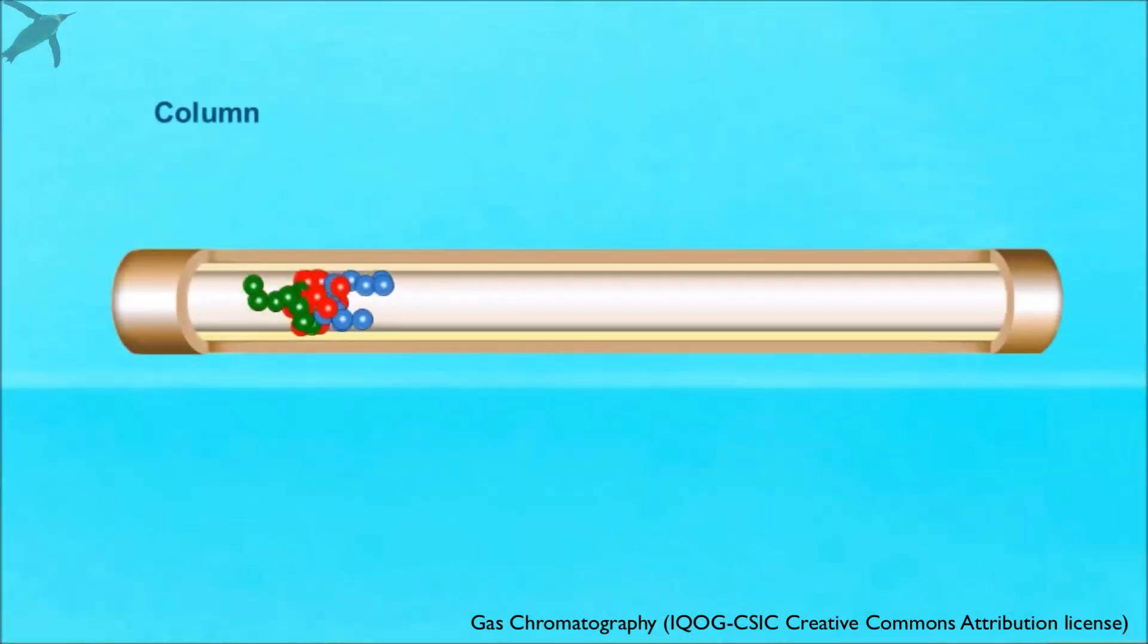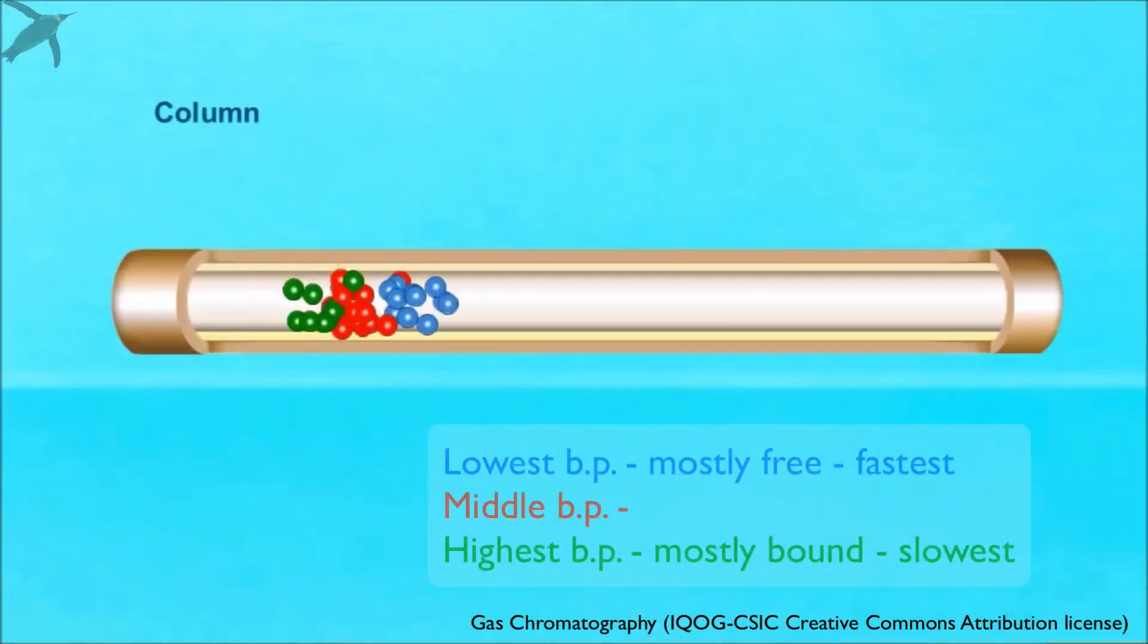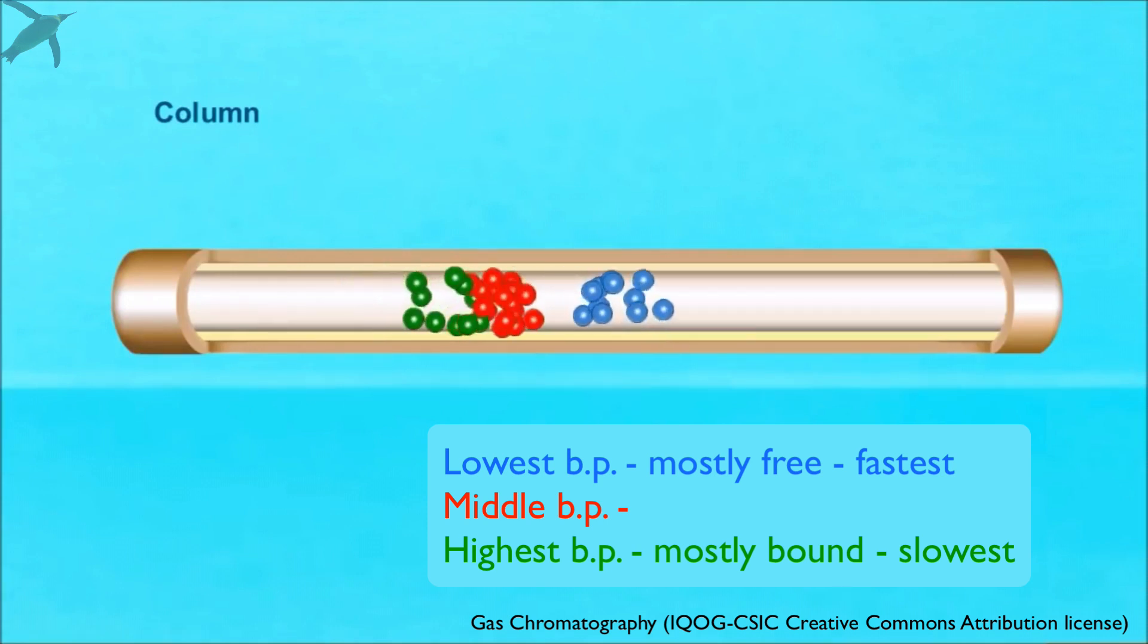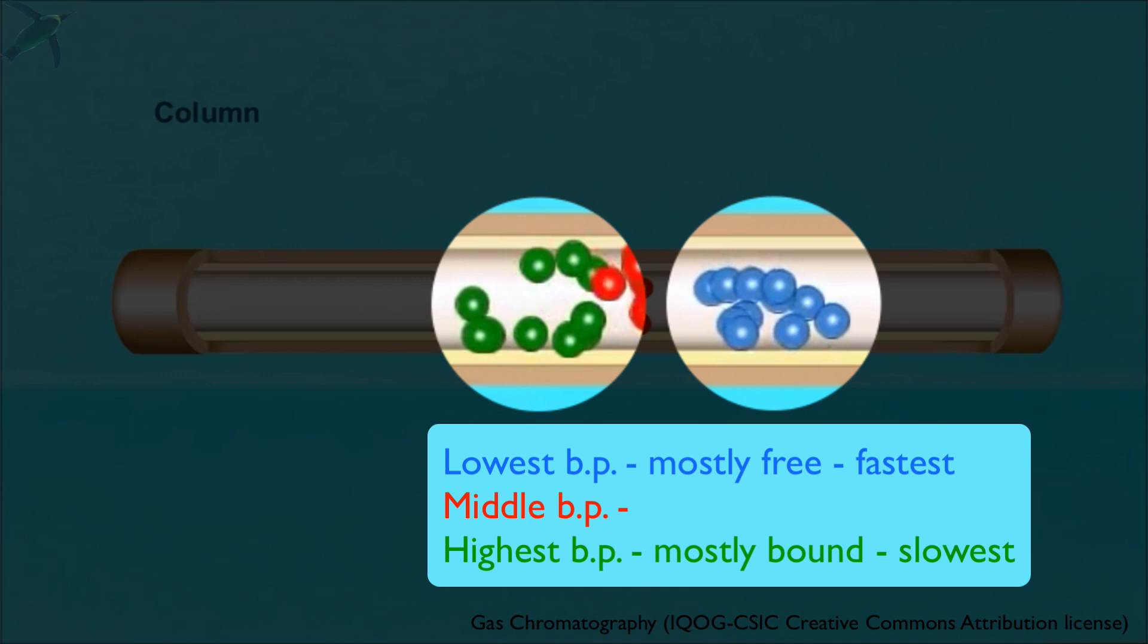Gas chromatography separates according to boiling point. Here, the blue component has the lowest boiling point, that is, it is the most volatile, and the green component has the highest boiling point, that is, it's the least volatile. On average, the most volatile component will spend more time in the vapor phase, traveling, while the least volatile component will spend more time in the liquid phase, stuck to the column.